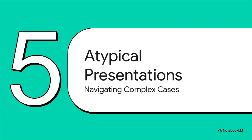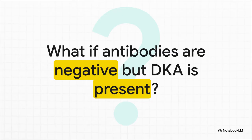We all know medicine isn't always textbook — not every patient fits neatly into this box. Let's talk about decoding those atypical presentations, because these can be some of the toughest diagnostic puzzles we face. Consider a common puzzle: your patient shows up with DKA, the classic sign of absolute insulin deficiency, but their autoantibodies are all negative. What in the world is going on? This is where you have to start thinking beyond that simple type 1 versus type 2 divide.